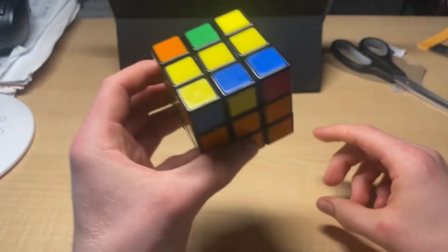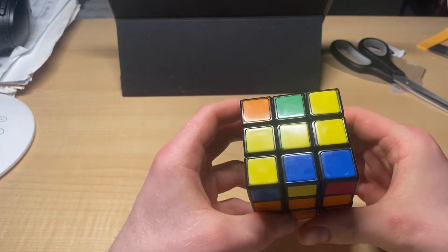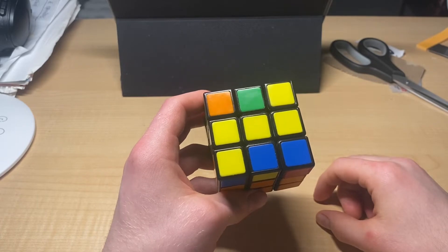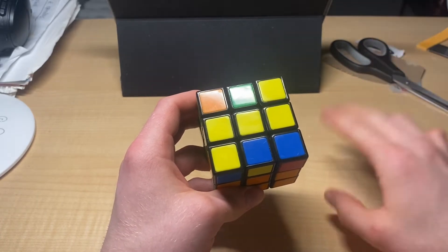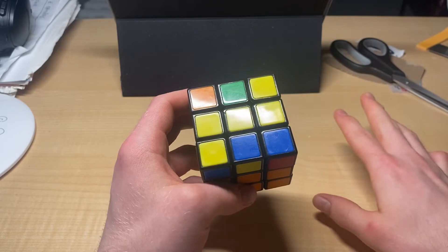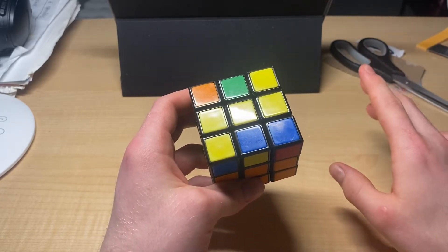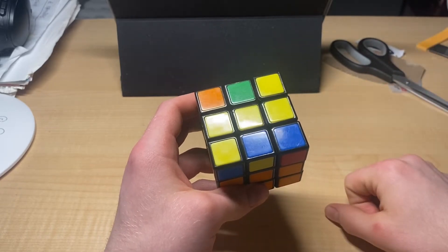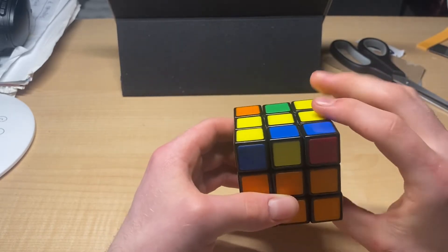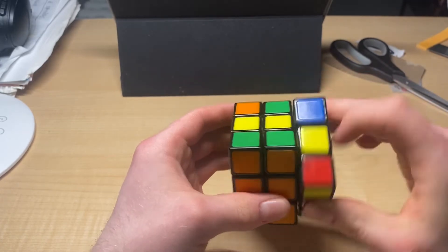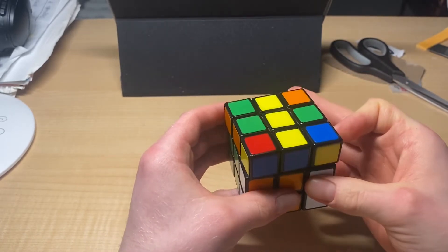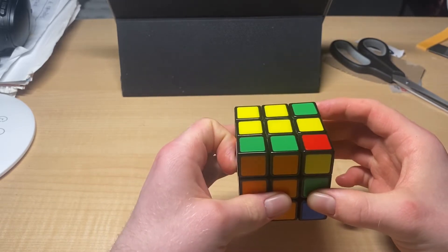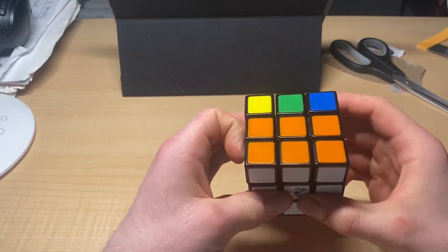I'll do step one, which is here. This step is the horizontal yellow line. And when I see that, I do the algorithm F, R, U, R prime, U prime, and F prime. So it's F, R, U, R prime, U prime, and F prime.